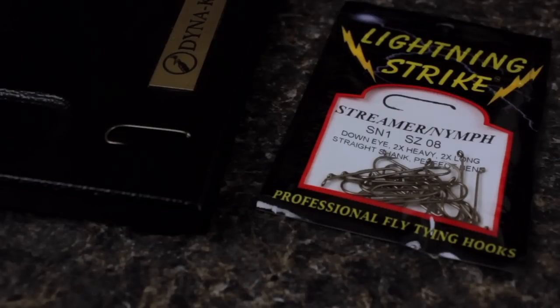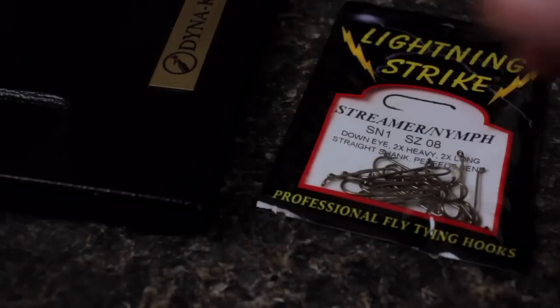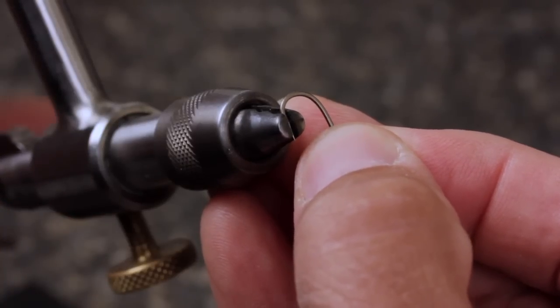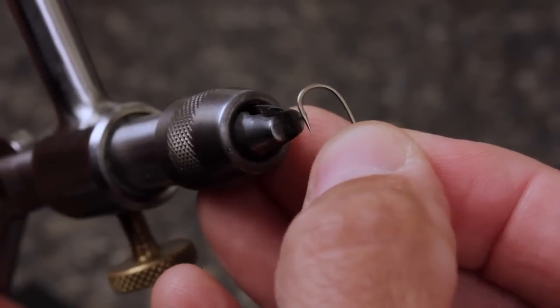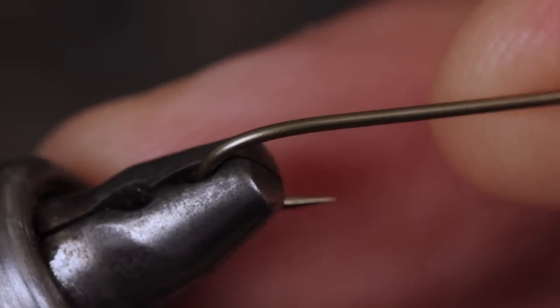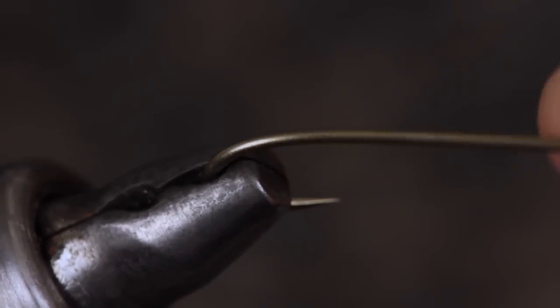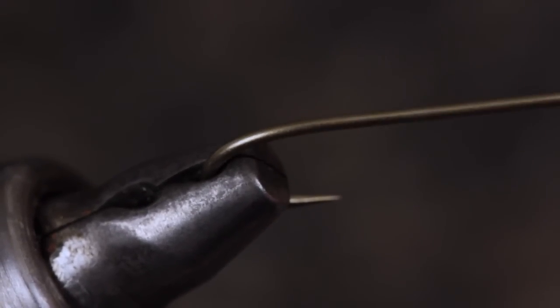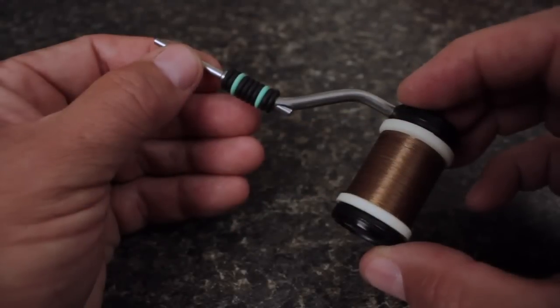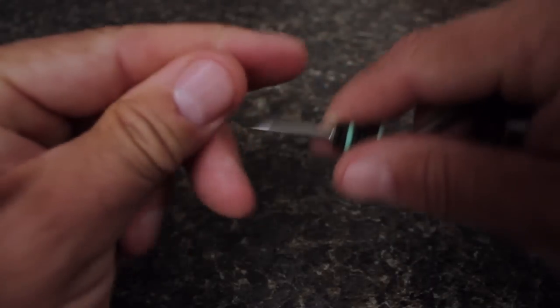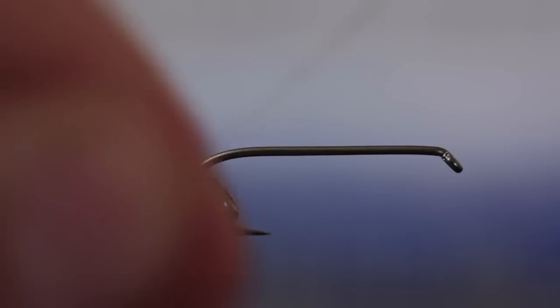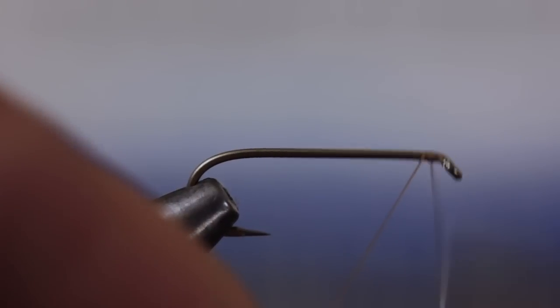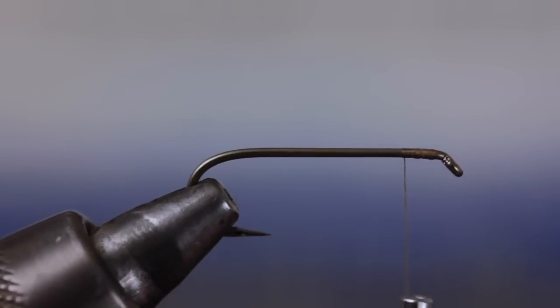For a hook, a Lightning Strike SN1 in size 8 is a good choice. Start by mashing the barb and getting the hook firmly secured in your tying vise. My vise jaws have special grooves which allow them to hold larger hooks very firmly. For thread, I've loaded a bobbin with a spool of 6-0 Olive Danville. Start your thread on the hook shank behind the eye and take a few wraps rearward before snipping off the tag.